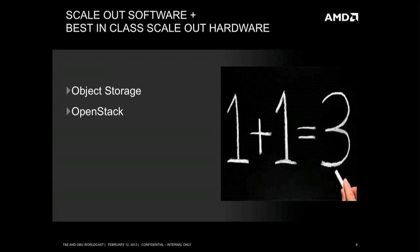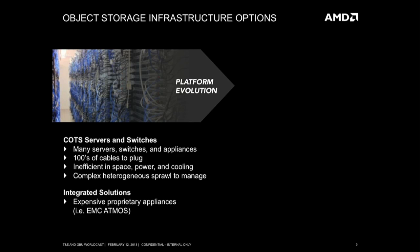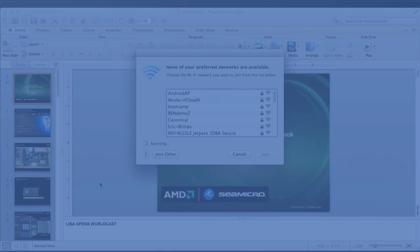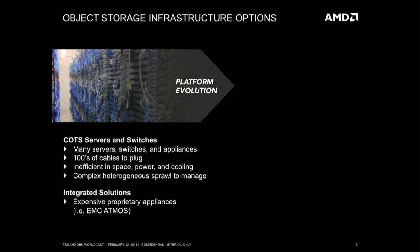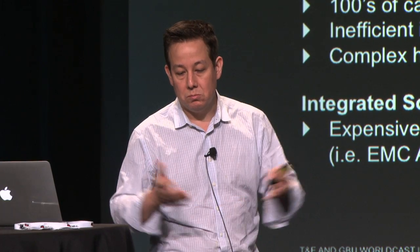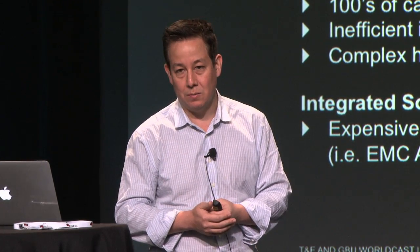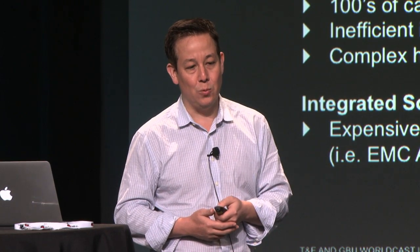Let's talk about what this actually means to the OpenStack community. Starting with object storage — that's OpenStack Swift. If you were to build an OpenStack Swift deployment today, one way is to take COTS off-the-shelf servers and switches. But that means a pool of servers, switches, and appliances, hundreds of cables to plug, inefficient space, power, and cooling — a complex, heterogeneous mix of equipment. It's cheap, but it costs a lot in OPEX. The other direction is an integrated solution, which is very expensive. And object storage is a very cost-sensitive market. So how can we address this with fabric computing?